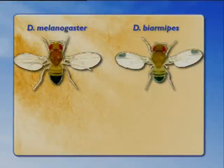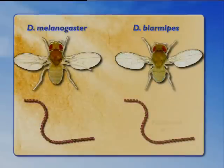Let's compare two flies: one without spots, which is the humdrum Drosophila melanogaster, and one with spots on the male, Drosophila biarmipes.